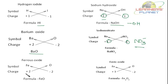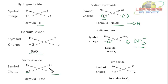For ferrous oxide, the valency of ferrous iron is plus 2 and oxide is minus 2. These charges are so placed that they are neutralized, and the formula is FeO.